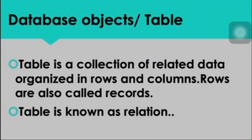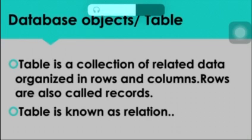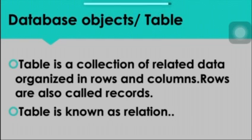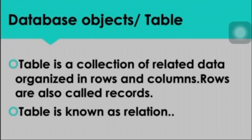The first object is a table. A table is a collection of related data organized in rows and columns. Rows are also called records.